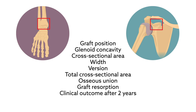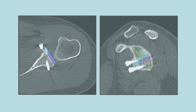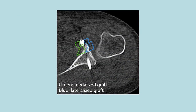For nearly all measures, the distal tibial allografts showed comparable radiological and clinical outcomes to the coracoid autografts. Although there were no significant differences between the procedures for bone union or glenoid measurements, the coracoid autografts were more likely to result in a lateral step formation.